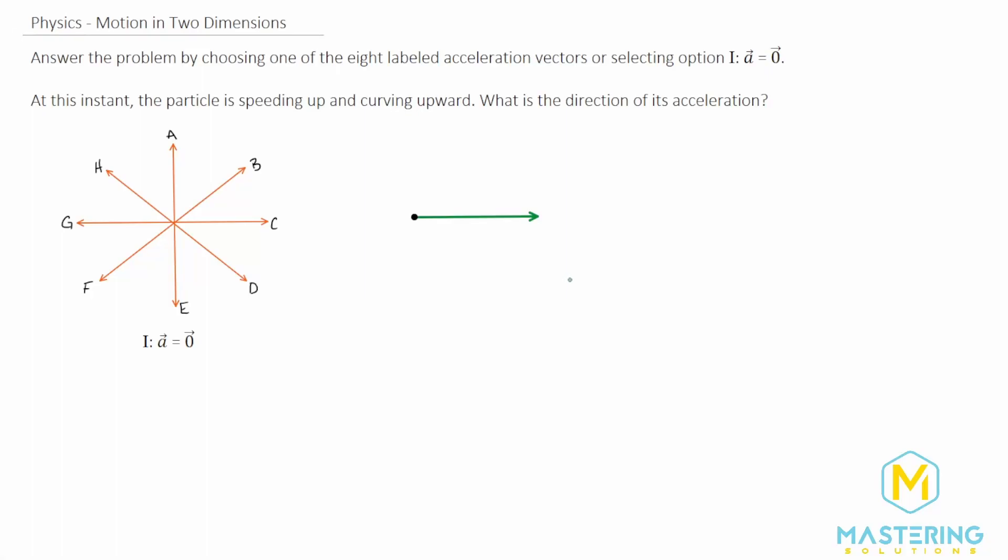Welcome to Mastering Solutions. In this motion in two dimensions problem, we have to answer the question by choosing one of these velocity vectors. The question says that at this instant the particle is speeding up and curving upward. So what is the direction of acceleration?